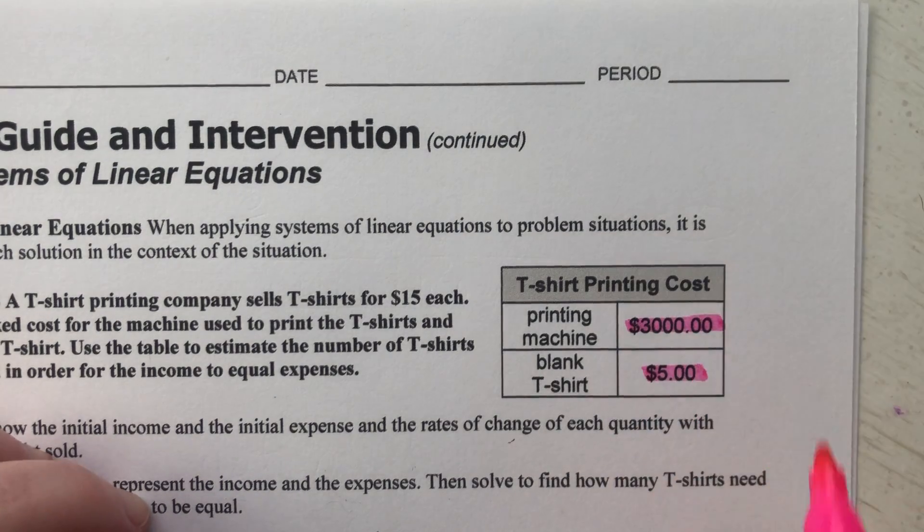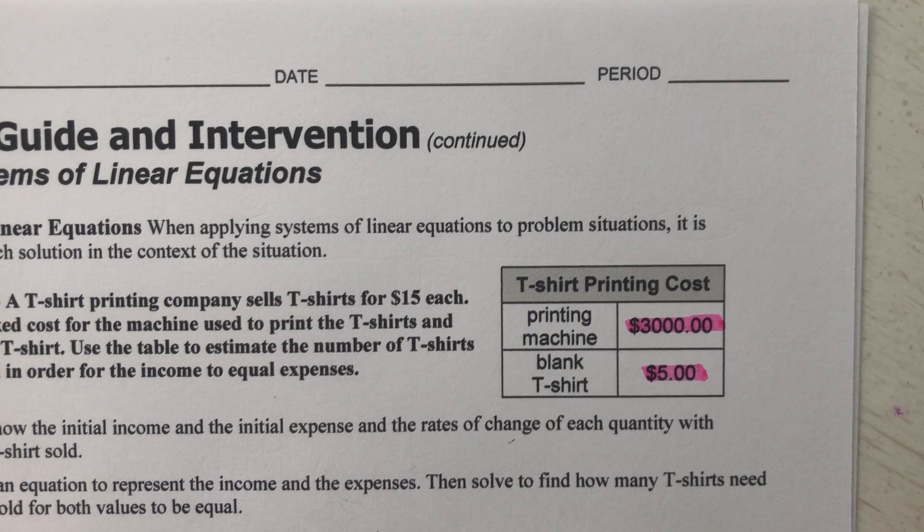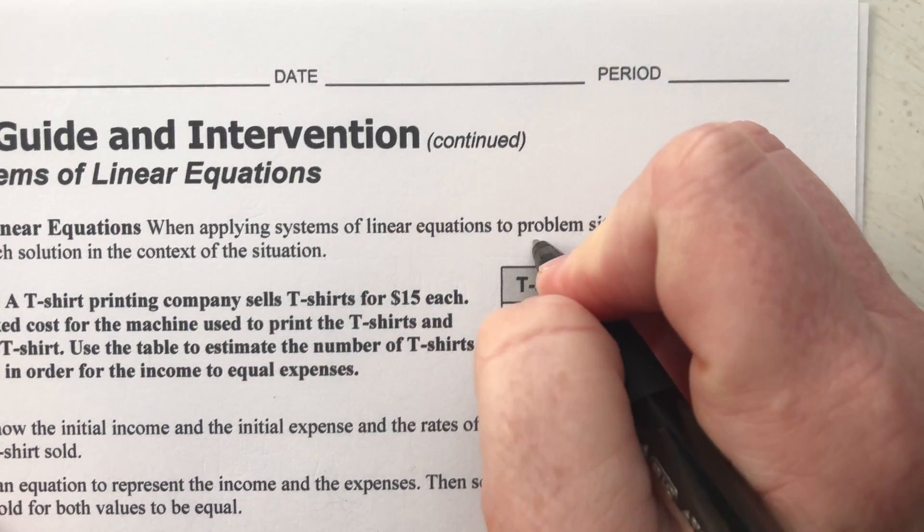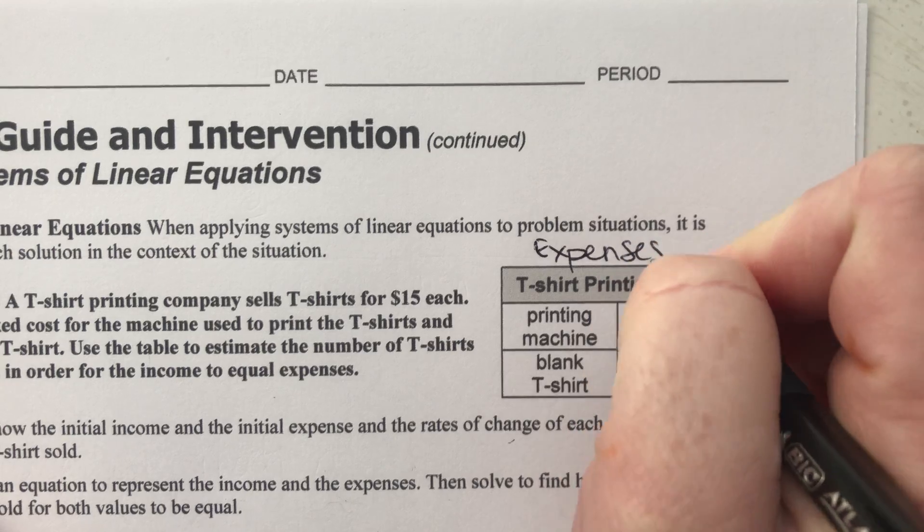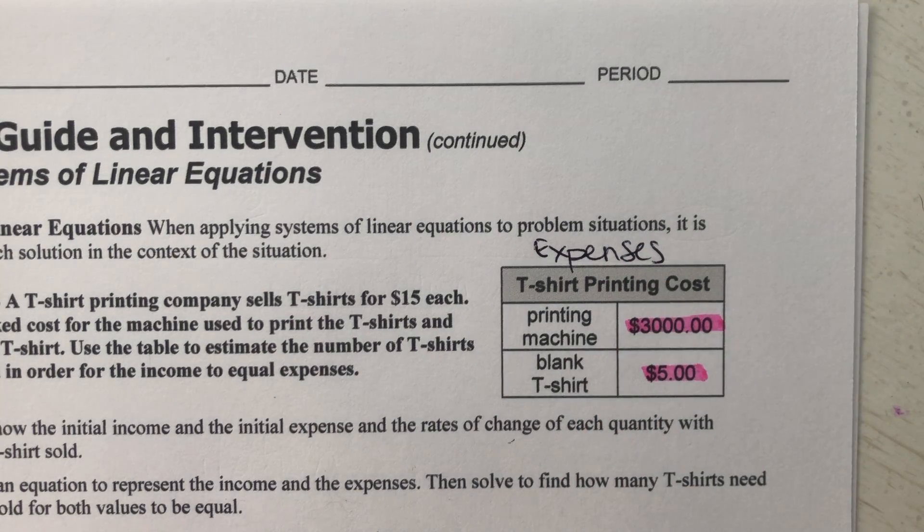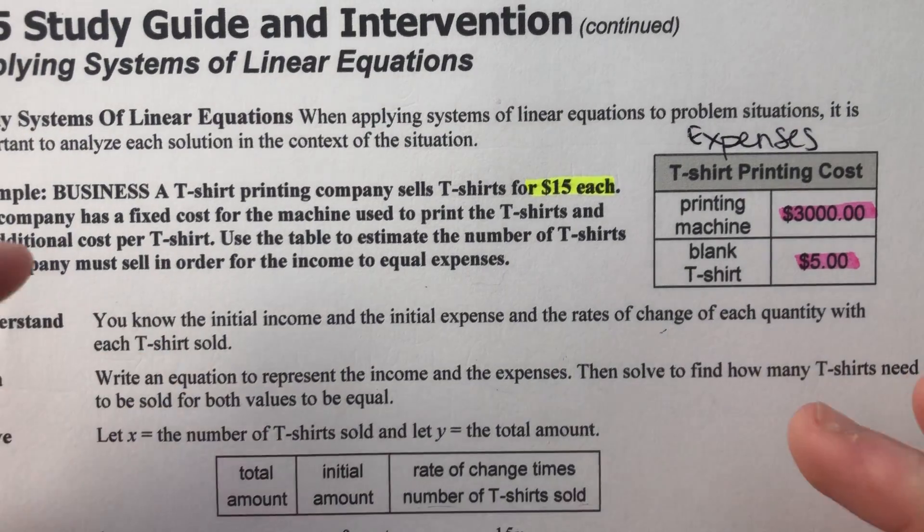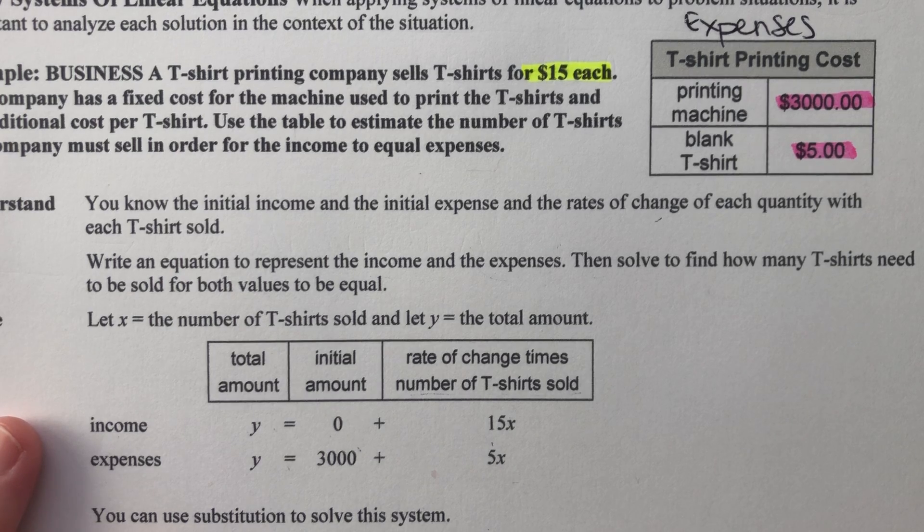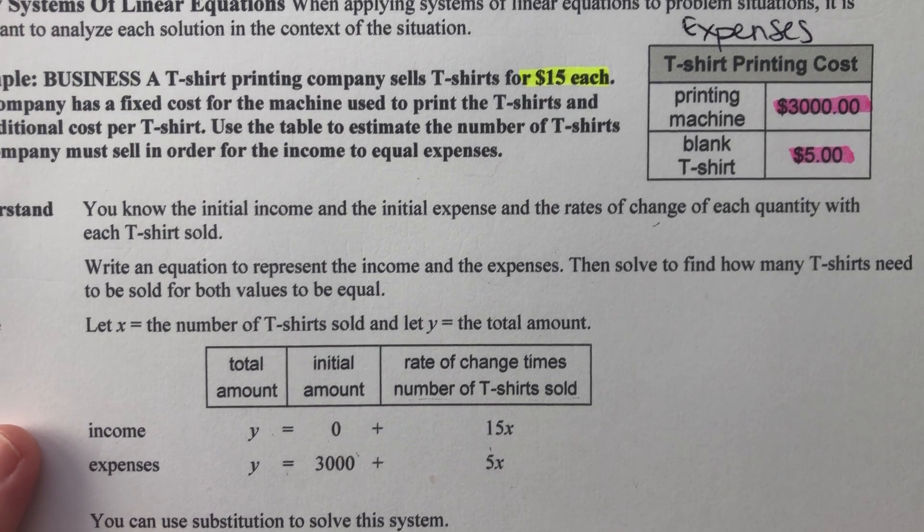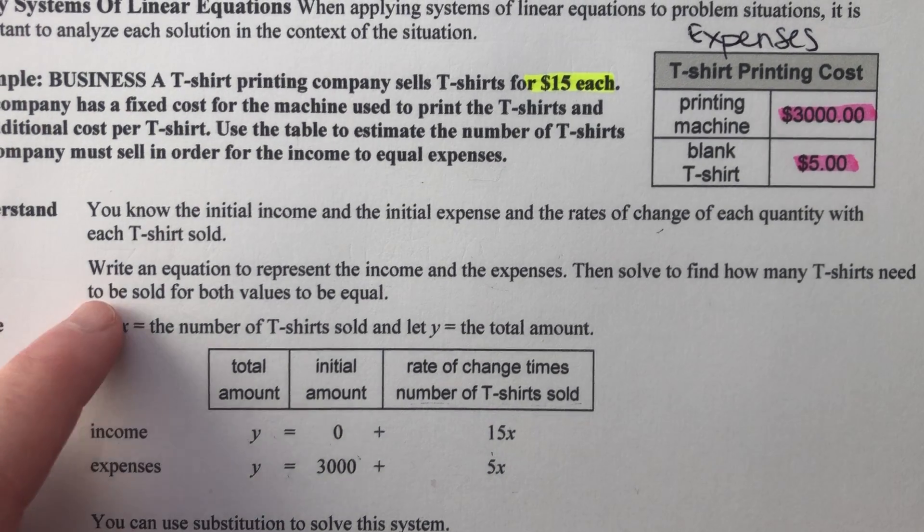So these are expenses. This is what the company has to pay out. And then how much does a company make? It sells t-shirts for $15 each. And so the question is, how many t-shirts does it have to sell to make as much money as it costs them to make the t-shirts? So here, we're just going to follow the thought process. Know the initial income and the initial expense and the rates of change of each quantity with each t-shirt sold.